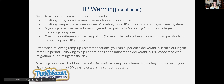Here are a few IP warming strategies: splitting non-time sensitive sends over various days, splitting campaigns between two systems, and gradually migrating volume. Know that even if you follow these ramp-up recommendations, depending on the time of year you can still experience deliverability issues. If you decide to do your IP warming right during the peak holiday season when everyone else is flooding the inbox, you are likely to hit deliverability issues. Some of our most established brands will even have little dips in deliverability around November and December because of how much everyone is sending.